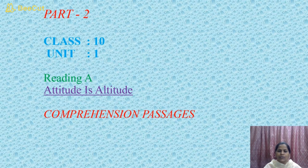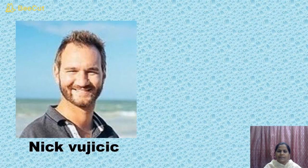Today is part two from the same lesson, 'Attitude is Altitude', Class 10, Unit 1, Reading A. Children, spell out the name of the person in the picture.